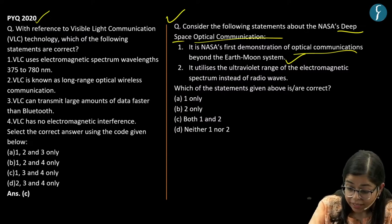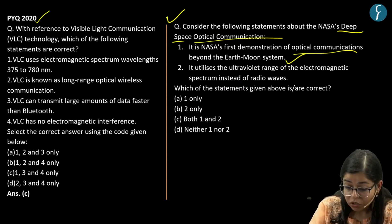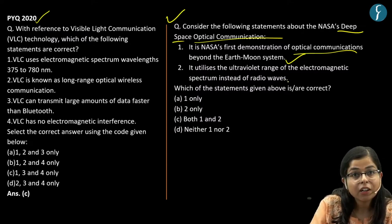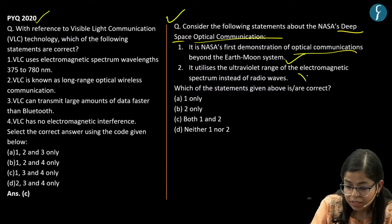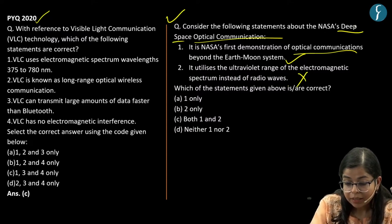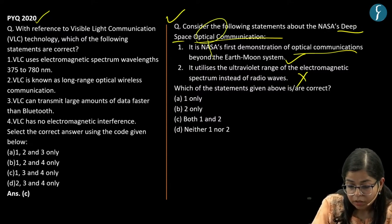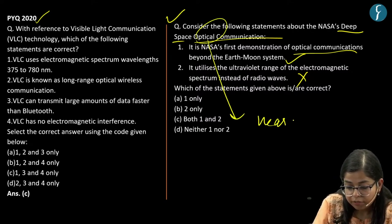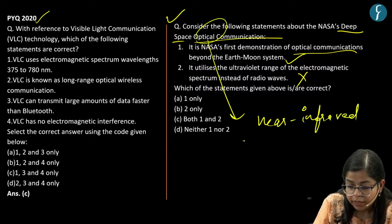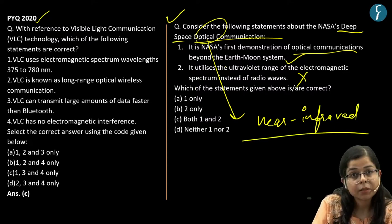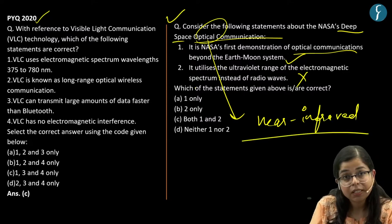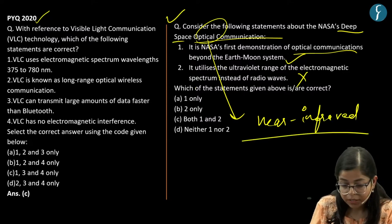The second statement says it utilizes the ultraviolet range of the electromagnetic spectrum instead of radio waves. This is an incorrect statement, as deep space optical communication utilized near-infrared radiation — it did not utilize the ultraviolet spectrum. Let's understand the basic nuances of this news article.